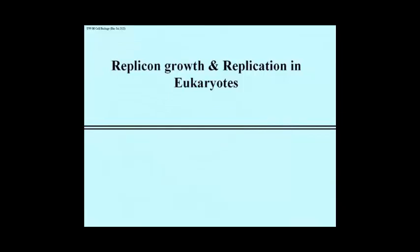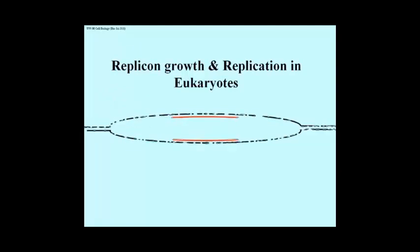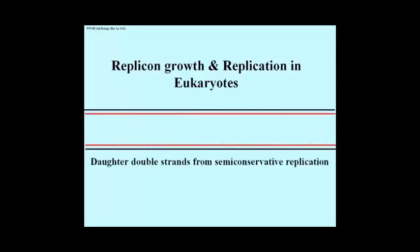Here's a representation of how linear chromosomal DNA of eukaryotes undergoes bi-directional replication from multiple origins of replication. An origin of replication forms a replicon with two replication forks. Multiple origins of replication start unwinding at different locations at different times, forming replicons, each of which replicates bi-directionally, and eventually all the replicons meet to form a complete daughter DNA double strand.